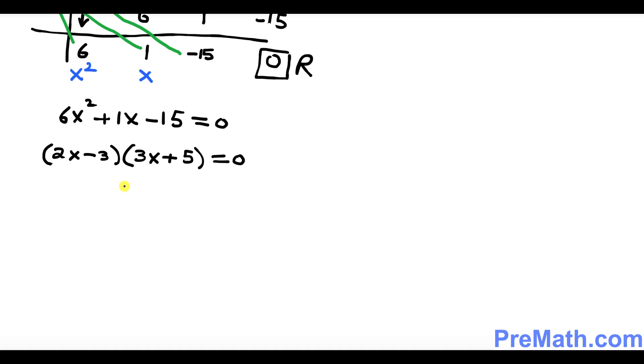So since they are equal to 0, we're going to split them up. I'm going to put down 2x minus 3 equal to 0 and the other one is going to be 3x plus 5 equal to 0.